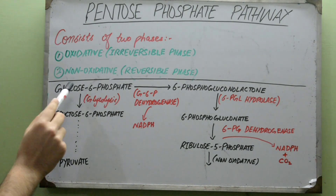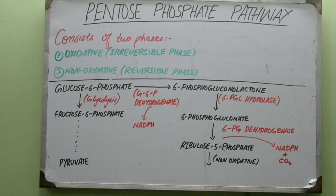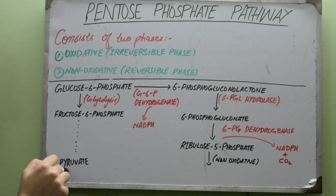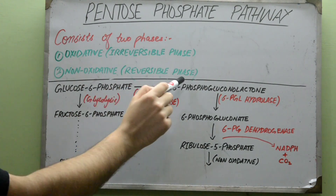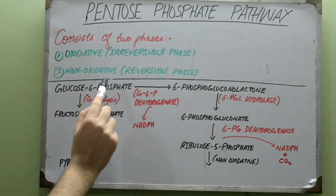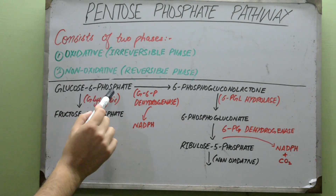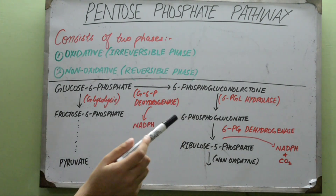We have a glucose 6-phosphate molecule which was formed from glucose by the hexokinase enzyme. That glucose 6-phosphate was also being used in glycolysis to ultimately produce pyruvate and ATP. But some of it is also used to produce 6-phosphogluconolactone, which is where the pentose phosphate pathway starts. So this glucose 6-phosphate is shunted into this pathway, hence it is known as the hexose monophosphate shunt.